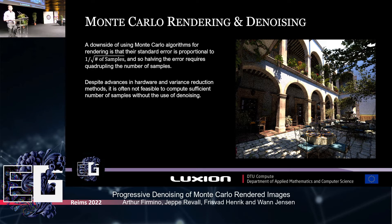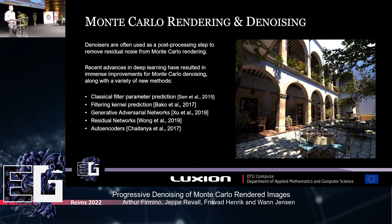Often many thousands of samples per pixel are required to reach an acceptable level of noise, and this number is dictated by a one-over-square-root convergence rate. Despite the advent of powerful hardware dedicated to ray tracing and variance reduction techniques, it is often not computationally feasible to reach acceptable quality by computing more samples alone, thereby requiring image denoising. Monte Carlo image denoising has been a vital component of the adoption of path tracing in the movie industry. In recent years, denoisers have dramatically improved in quality due to neural networks and machine learning.